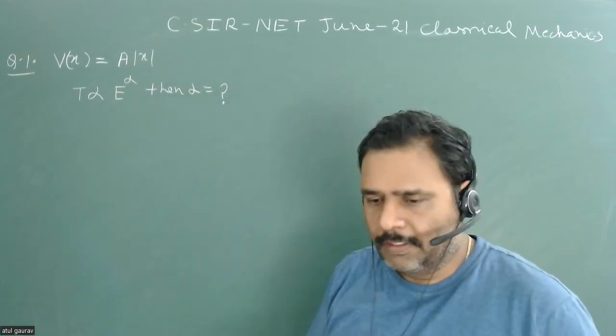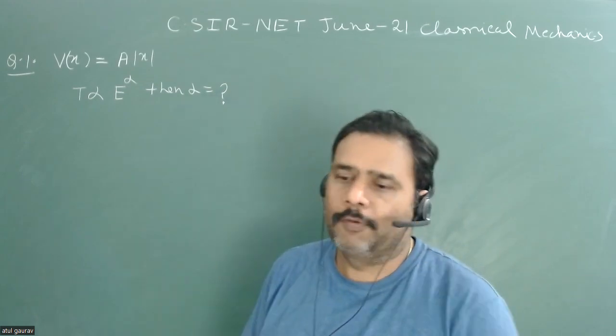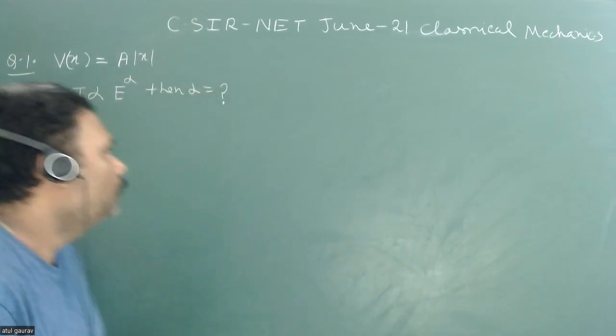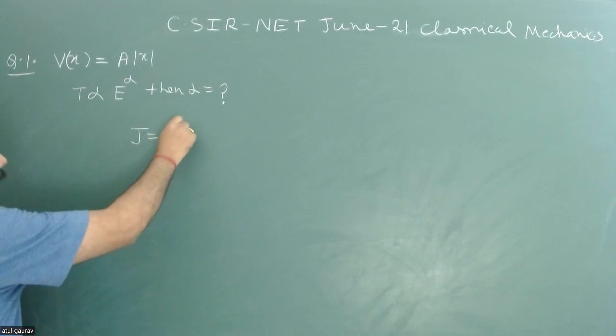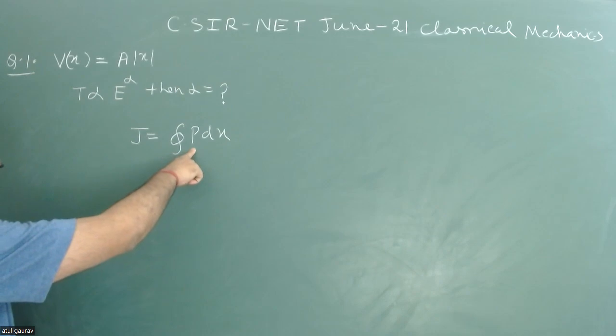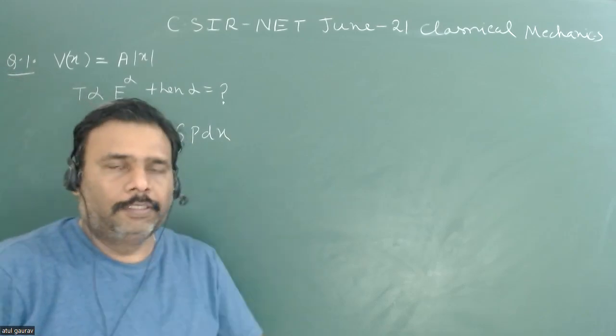So this is a very wonderful question. First, let's see how we can approach it. We know that action-angle variable J is given by integral of p dx, where p is momentum and x is position, and this is for the complete closed curve or for one particular period of motion.